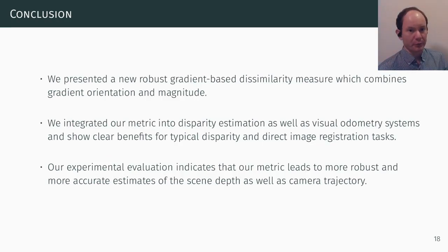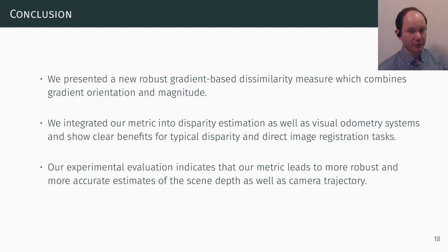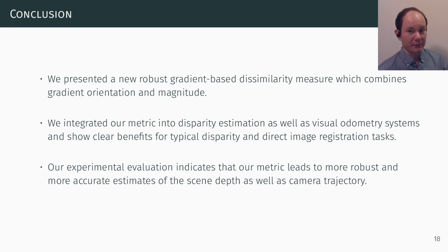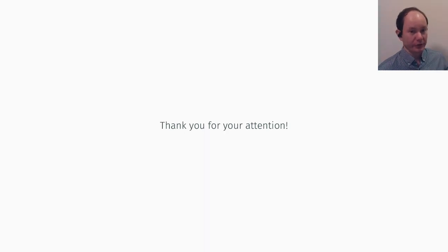In conclusion, we presented a new robust gradient-based dissimilarity measure which combines gradient orientation and magnitude. We integrated our metric into disparity estimation as well as visual odometry systems and show clear benefits for typical disparity and direct image registration tasks. Our experimental evaluation indicates that our metric leads to more robust and more accurate estimates of scene depth as well as camera trajectory. Thank you for watching.